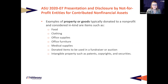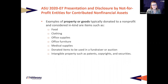Let's go through some examples of property or goods. Some property and goods that are typically donated and considered in-kind are food, clothing, office supplies or furniture, medical supplies, and notably donated items used in a fundraiser or auction, which are within the standard and should be recorded as revenue. Also intangible property, such as patents, copyrights, and securities.